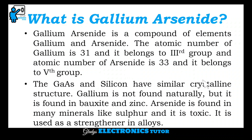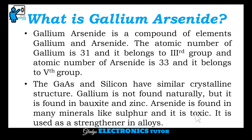What is gallium arsenide? Gallium arsenide is a compound of elements gallium and arsenide. The atomic number of gallium is 31 and it belongs to the third group, and the atomic number of arsenide is 33 and it belongs to the fifth group. Gallium arsenide and silicon have similar crystalline structure. Gallium is not found naturally but is found in oxide and zinc. Arsenide is found in many minerals like sulfur and it is toxic. It is used as a strengthener in alloys.